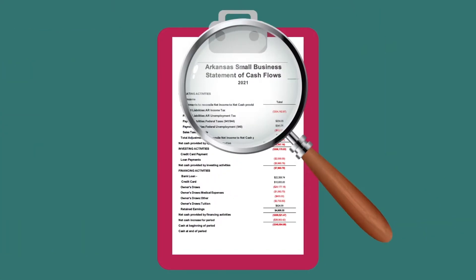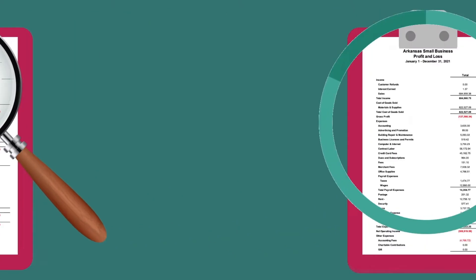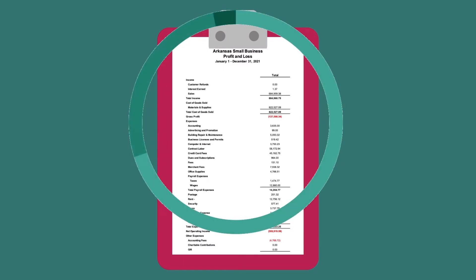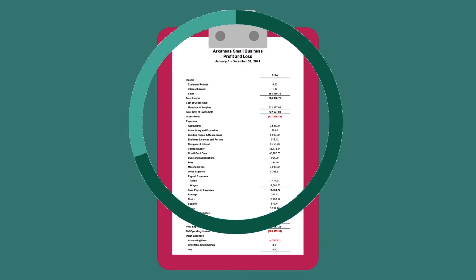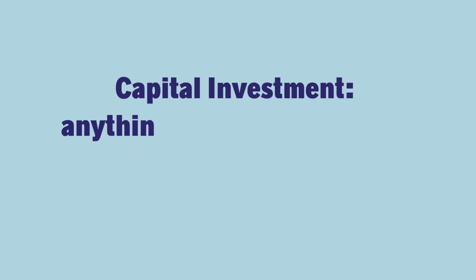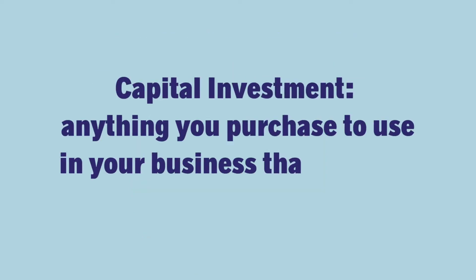Number two: credit card payments for debt from prior periods. Payments for this kind of debt work the same way as loan payments — the principal repayment will appear on your cash flow statement, and the interest expense will appear on your P&L.